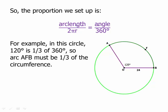For example, in this circle we have an angle of 120 degrees. Well, 120 degrees is one-third of 360, so we have a third of the whole circle. Because that angle is a third of 360, the arc has to be a third of the circumference. The circumference is 2πr, which is 48π because the radius is 24. And then one-third of that is 16π. So we have an arc length of 16π.